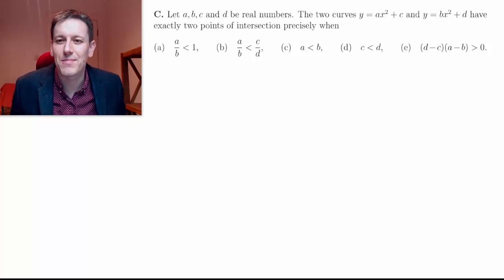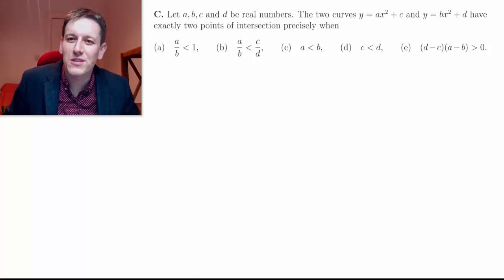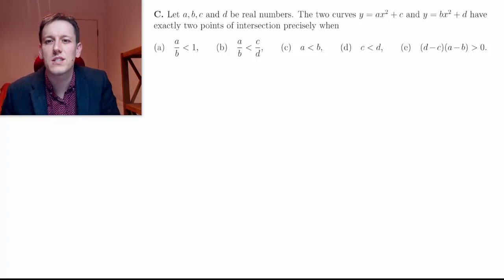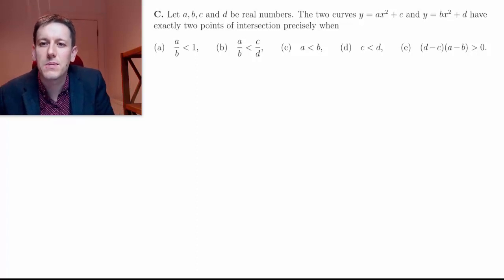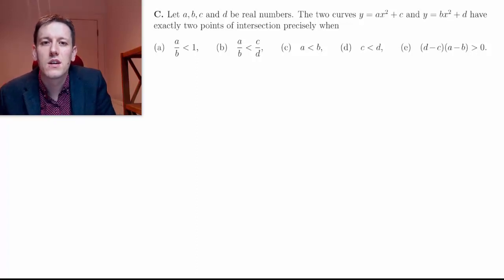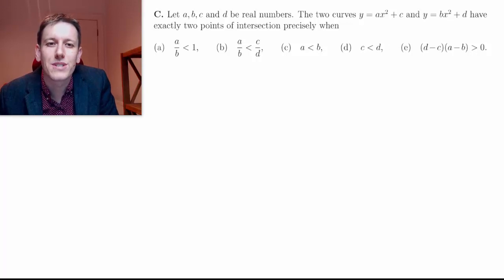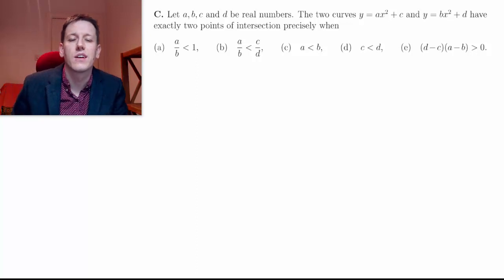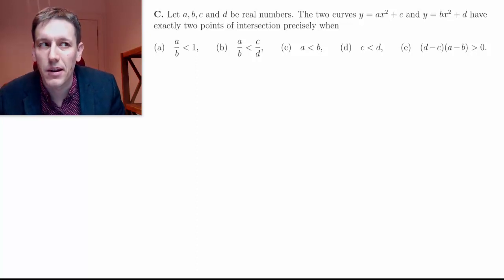Hi, this is part C of the short answer questions for the Oxford Maths Admissions Test from 2018. Let A, B, C and D be real numbers. Two curves, y equals ax squared plus c and y equals bx squared plus d, have exactly two points of intersection when which of the following conditions apply.